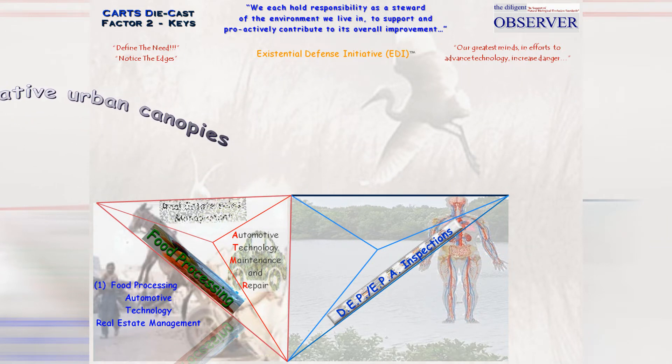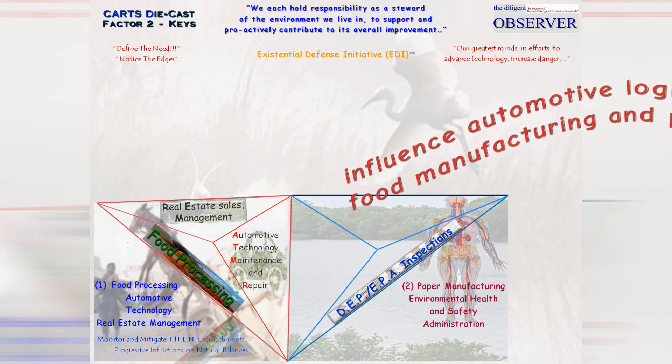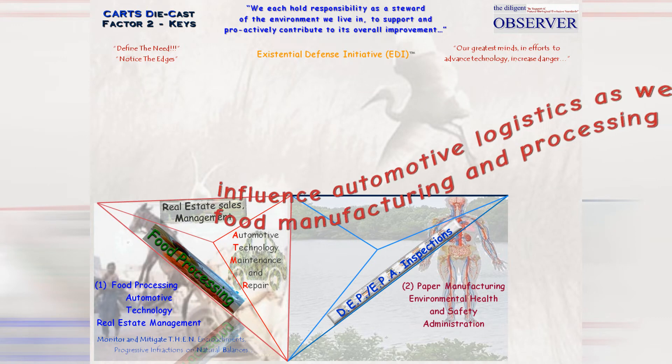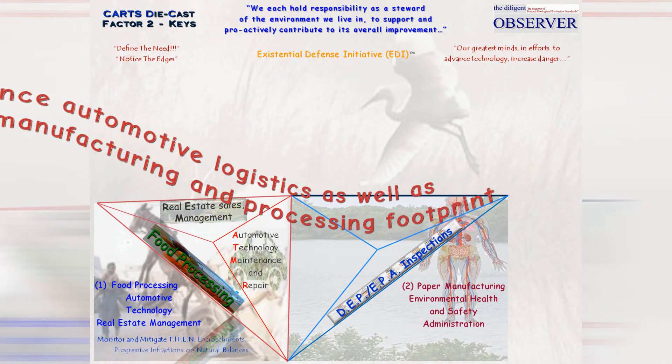as well as the nefarious food manufacturing and processing footprint so dramatically affecting overall health and wellness. Paper manufacturing represents the most flexible, versatile, and environmentally friendly domestic manufacturing resource.